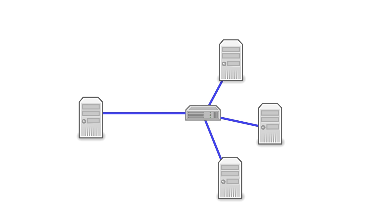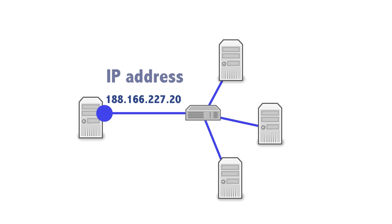Servers do not work in isolation — they work in networks, and in networks each and every participant needs to have an address in order to receive packets. In this example I've got a single network interface with address 188.166.227.208. This is actually the real IP address of my server on DigitalOcean.